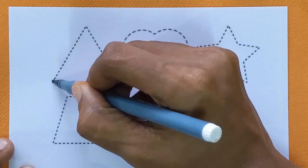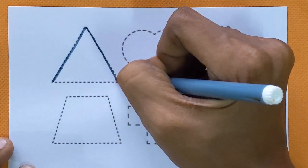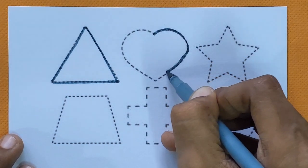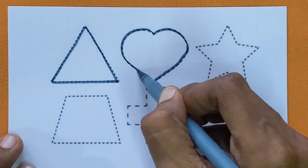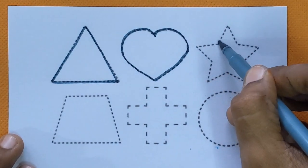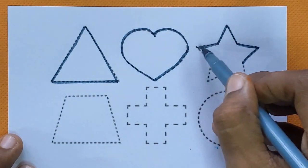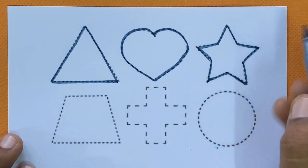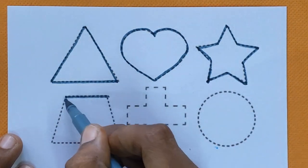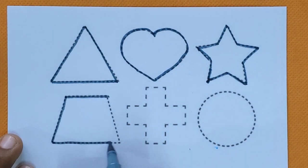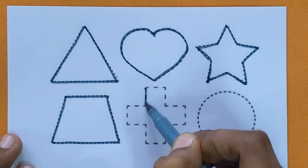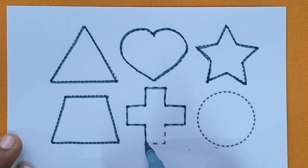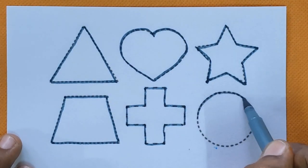This is triangle shape, heart, star. Next piece, trapezoid. Cross shape. And this is circle shape.